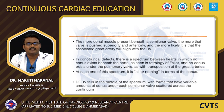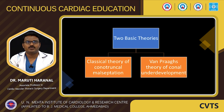In conotruncal defects there is a spectrum: hearts in which no conus exists beneath the aorta, as seen in Tetralogy of Fallot, and no conus exists under the pulmonary valve, as seen in Transposition of the Great Arteries. At each end of the spectrum it is all-or-nothing in terms of the conus. DORV falls in the middle of the spectrum, with variable amounts of conus under each semilunar valve. Two basic theories have been proposed to describe the embryology of DORV: Lev's classical theory of conotruncal malseptation and Van Praagh's theory of conal underdevelopment.